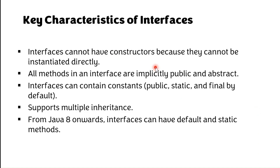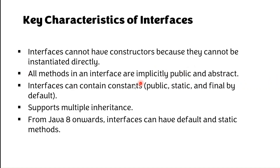Key characteristics of interfaces: interfaces can't have constructors because they can't be instantiated directly — we can't create an object for an interface. All methods in the interface are implicitly public and abstract; we don't need to use these keywords when defining methods in the interface.